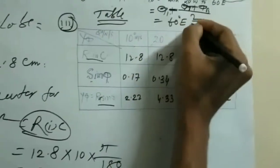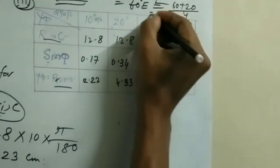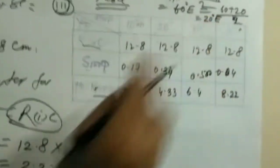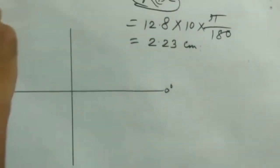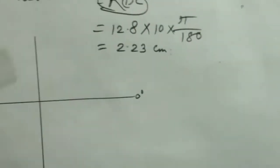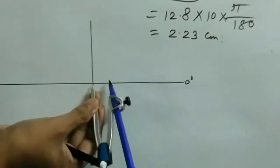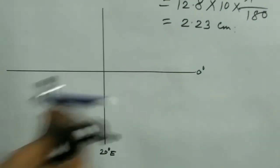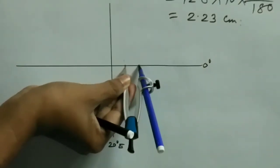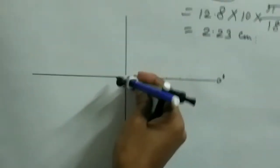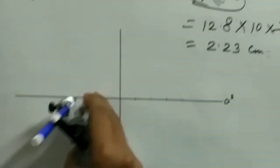60 degrees east minus 60 plus 20 divided by 2 equals 20 degrees east as the central meridian. So 20 degrees east is going to be at position 5. The RIC is going to be 2.23.